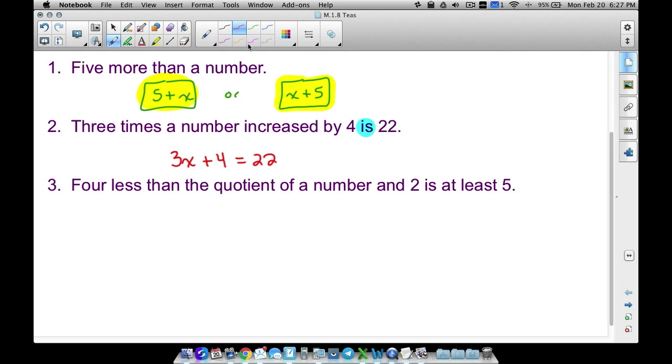We'll see an example right here, number three. So tricky, tricky, tricky. Four less than the quotient of a number and two. Well, the quotient of a number and two, we can write that as n over 2, or we can write it as n divided by 2. So the quotient of a number and two is what we have right here.